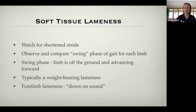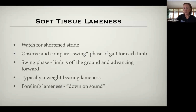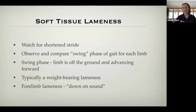Usually in soft tissue lameness we're going to see more of a weight-bearing lameness. In forelimb lameness, something we call 'down on sound' — an easy way to determine forelimb lameness. In slow motion video, you'll see the dog's head go down toward the ground as the unaffected or sound limb hits the ground. If I'm comfortable on a limb, I'll put all my weight through it, which brings my head down. As I'm about to bear weight on the injured limb, I'm going to pull my weight away from that leg — pulling my head up to take weight off. That's what we mean by down on sound.